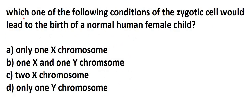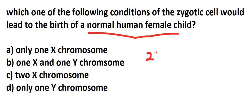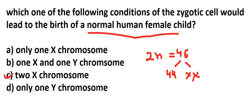Next question: which one of the following conditions of zygotic cells would lead to the birth of a normal human female child? A normal human female has two X chromosomes. Therefore, if the zygote has two X chromosomes, the correct answer is option C.